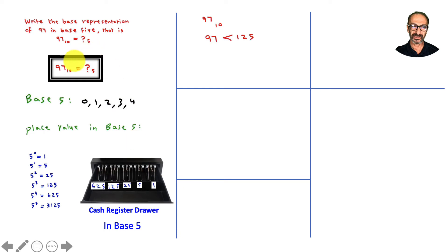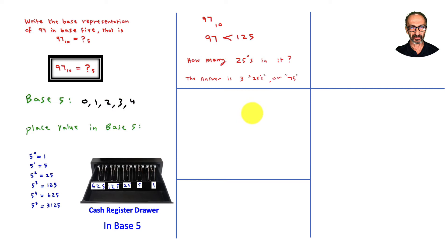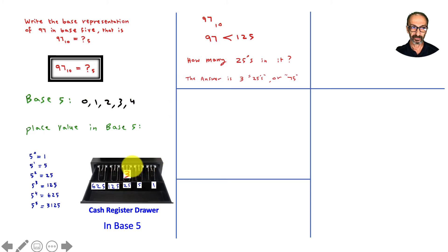So for 97: if you want to put it in this cash register, 97 is less than 125, so the 125 and 625 places will be empty. I look at 25s — how many 25s are in 97? There are three 25s, which equals 75. So I take 75 out of 97, put three in the 25s place. What's left? 22.